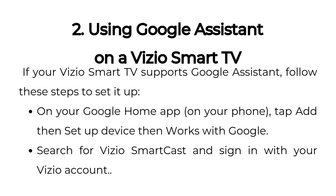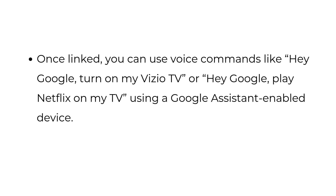Two: using Google Assistant on a Vizio Smart TV. If your Vizio Smart TV supports Google Assistant, follow these steps to set it up. On your Google Home app on your phone, tap Add, then Set Up Device, then Works with Google. Search for Vizio SmartCast and sign in with your Vizio account. Once linked, you can use voice commands like, "Hey Google, turn on my Vizio TV," or "Hey Google, play Netflix on my TV," using a Google Assistant-enabled device.